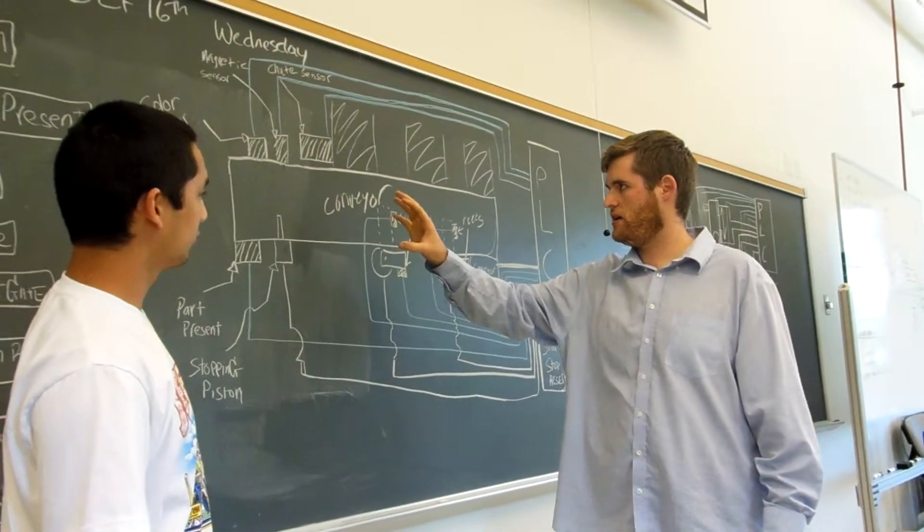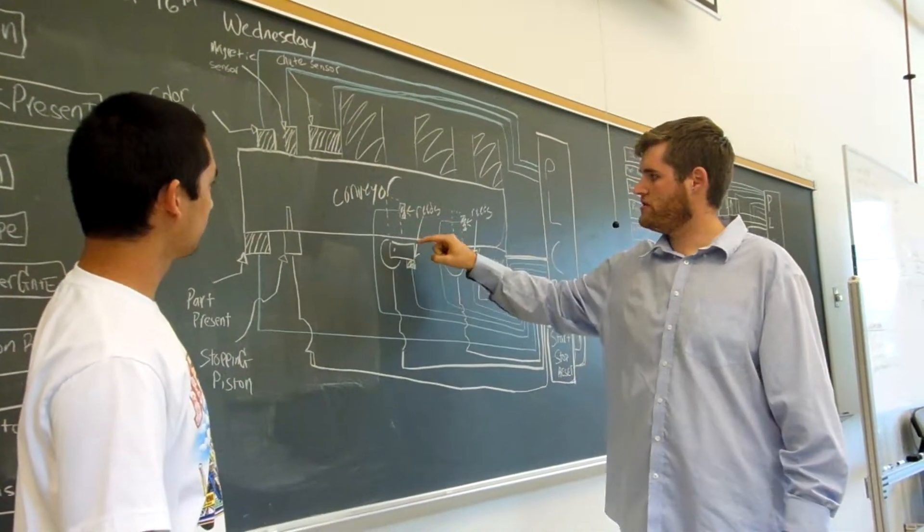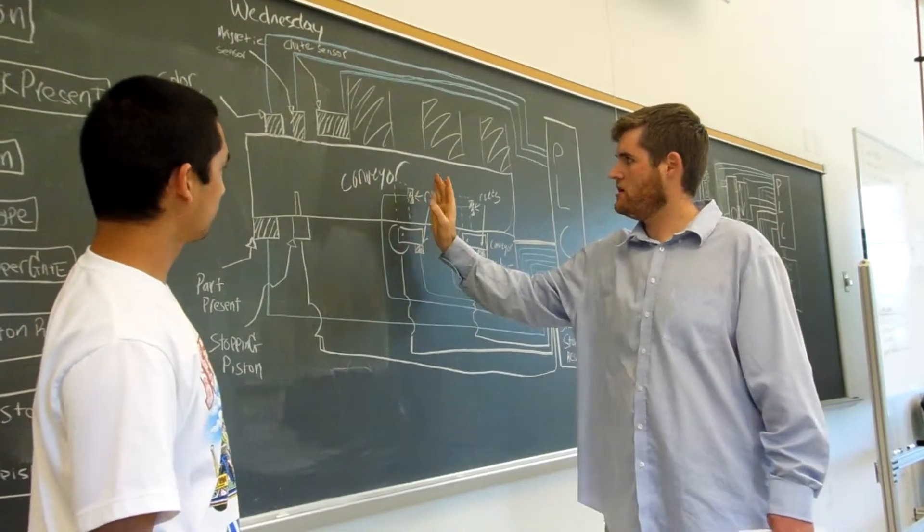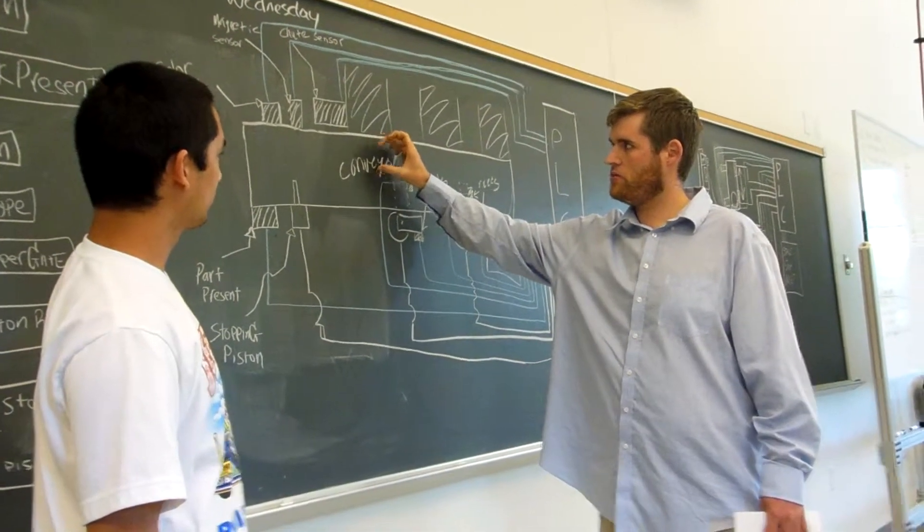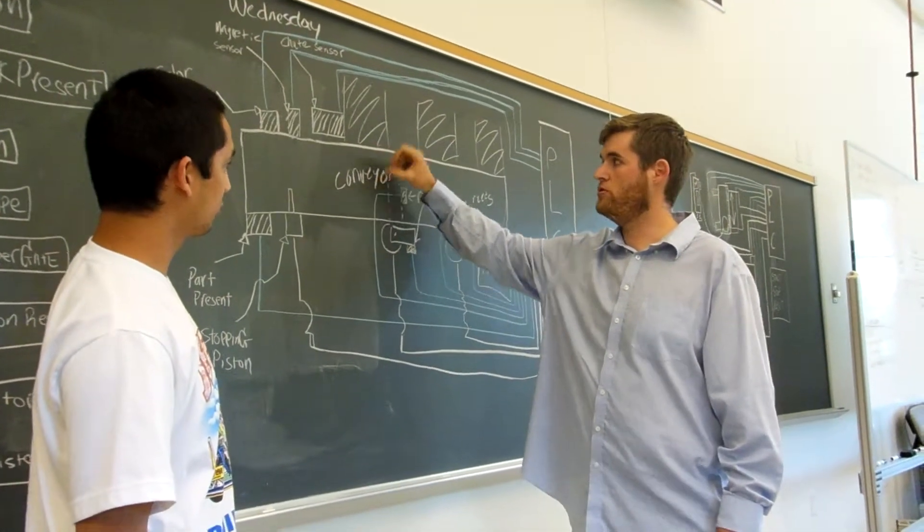And then, so let's say it's an orange puck. It knows it's orange with these sensors, moves forward. This gate will trip simultaneously letting the puck pass. The puck will sometimes bind up here, which is why the chute sensor is here, because it sometimes takes a little bit longer for it to move from the gate.